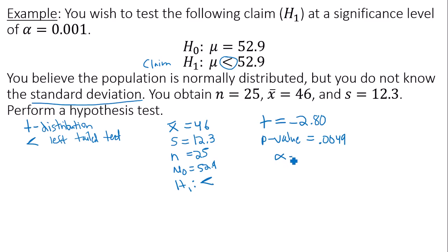My level of significance alpha is 0.001. I have to take my p-value and compare it to alpha. In this case, the p-value is actually greater than alpha.